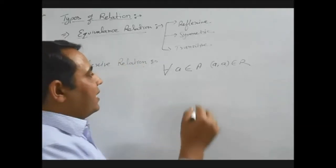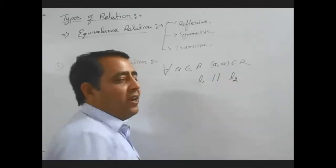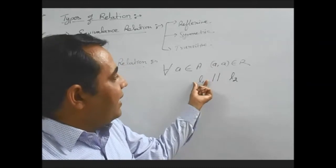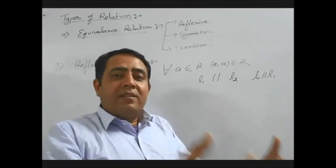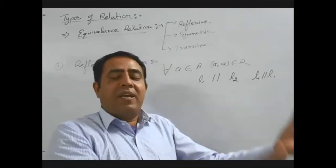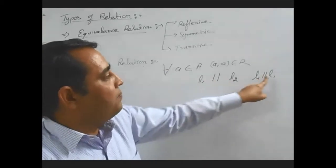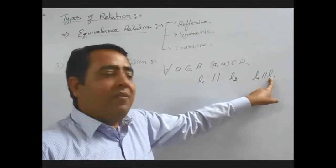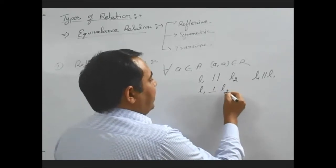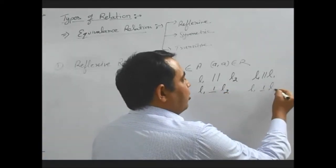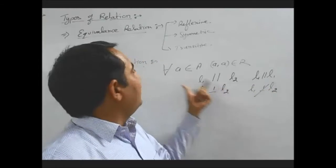We can take an example: the relation is between two lines, L1 and L2, where L1 is parallel to L2. We can say that every line is parallel to itself also — L1 is parallel to L1. The same relation is applicable to every element, so this is a reflexive relation. But if the relation given is 'line 1 is perpendicular to line 2,' can we say line 1 is perpendicular to itself? No, it is not possible. A line cannot be perpendicular to itself, so this does not qualify as a reflexive relation.